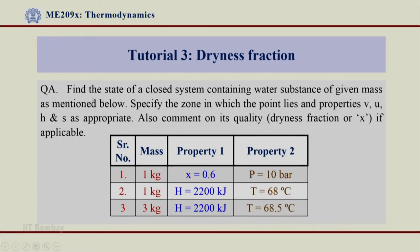The question is find a state of a closed system containing water substance of given mass as mentioned below. Specify the zone in which the point lies and properties V, U, H and S as appropriate. Also comment on its quality which is the dryness fraction if applicable.